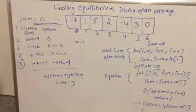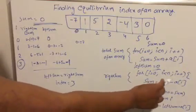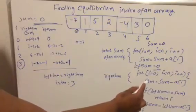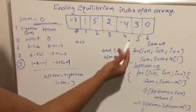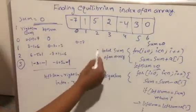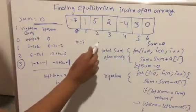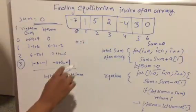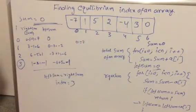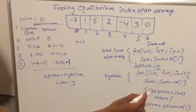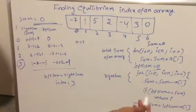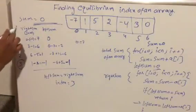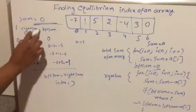We loop with: for i equal to zero, i less than n, i plus plus. The right sum starts as the total sum, and we eliminate elements from the right sum one by one. We reach the equilibrium index when the left sum equals the right sum; otherwise, we increase the left sum by adding the current index element.